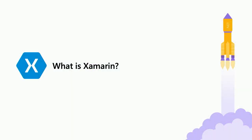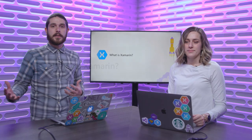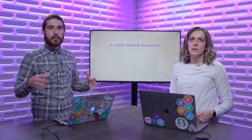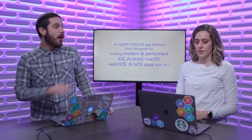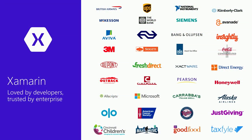One thing that we get asked all the time by .NET developers is what exactly is Xamarin? If you're a .NET developer and you want to build an iOS or Android app, that's Xamarin. Xamarin is an open source app platform from Microsoft to build modern and performant iOS, Android, Mac OS, watchOS, and tvOS applications with C# and .NET. It's been around for over a decade, so there are tons of companies that entrust Xamarin and .NET today for their internal apps, their external apps — anything you can think of.